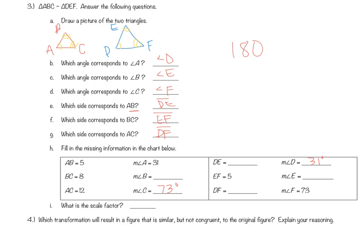So we take 180, we subtract 31, so this becomes 149. And then we subtract 73, and now I have 76 degrees, which is measure of angle E and measure of angle B.